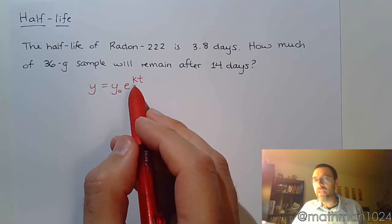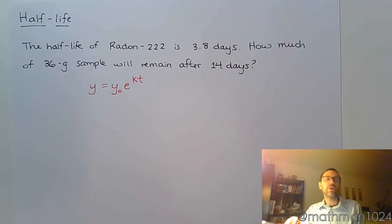If I knew my rate, if I knew my rate of decay, then I could just throw all that stuff into my graphing calculator, and it's going to spit out the answer that tells me how much is going to be left after 14 days. We don't know the k, but we can find the k.